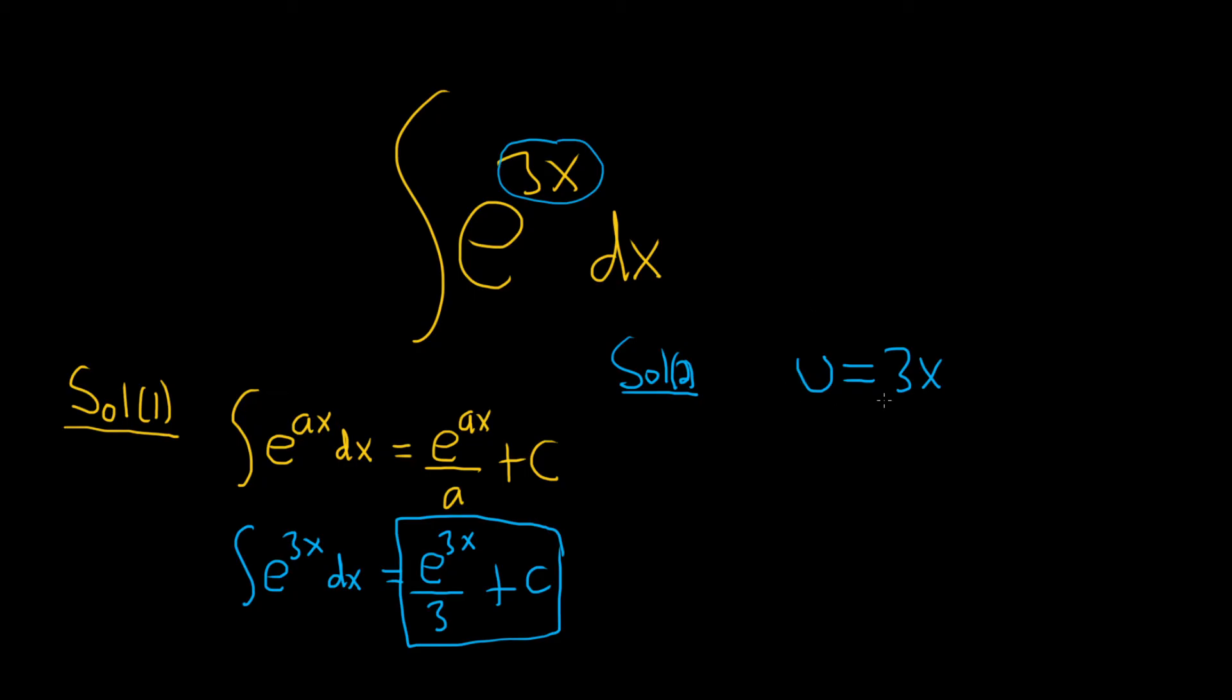Then you take the derivative of both sides using what's called differential notation. When we take the derivative of u, we just write du. That's the derivative of u. And then here, the derivative of x is 1, so we just get 3 times 1 times dx. So du is equal to 3 dx.